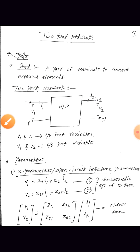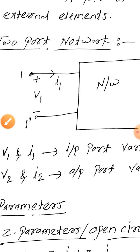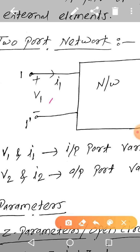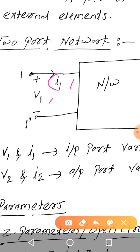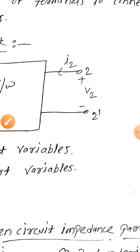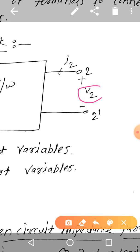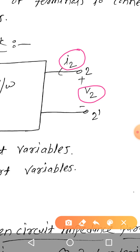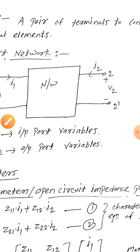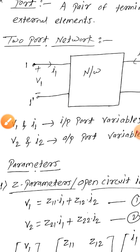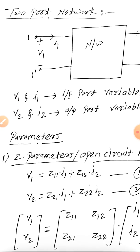V1 and I1 are the input port variables. V1 is known as the input port voltage and I1 is known as the input port current. Similarly, V2 and I2 are the output port variables. V2 is the output port voltage and I2 is the output port current. So V1, I1, V2, I2 — we have input port variables and output port variables.